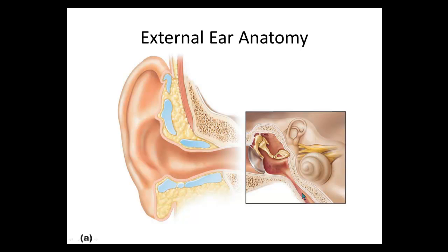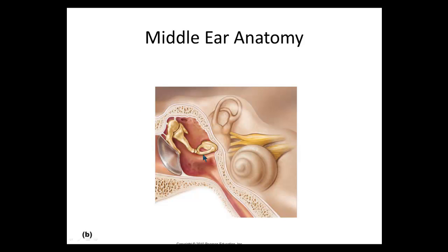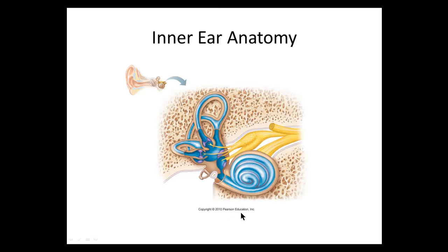This close-up view of the middle ear shows the three ear bones — malleus, incus, stapes — and the auditory or eustachian tube. The inner ear has a snail-like structure: the three semicircular canals at one end are filled with fluid important for balance, and the vestibule is the connecting piece between the semicircular canals and the cochlea. The stapes, the third middle ear bone, attaches to the inner ear at the vestibule.